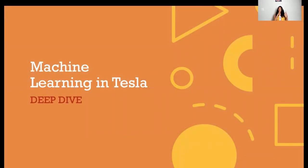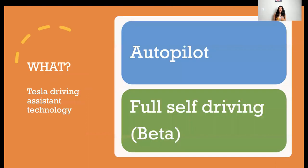So let's start talking about machine learning in Tesla. This is going to be a deep dive into how Tesla's technology works. As we know, there are two sections in Tesla's driving assistant technology: autopilot and full self-driving. Autopilot is currently enabled in all the cars, and full self-driving is available on purchase and only in beta versions because of various compliance requirements that exist.